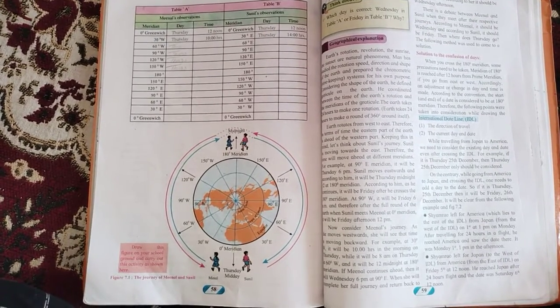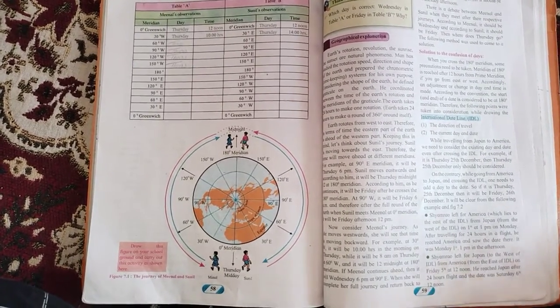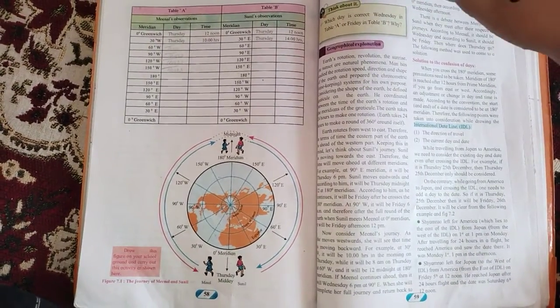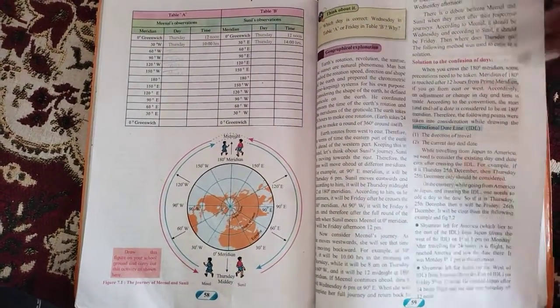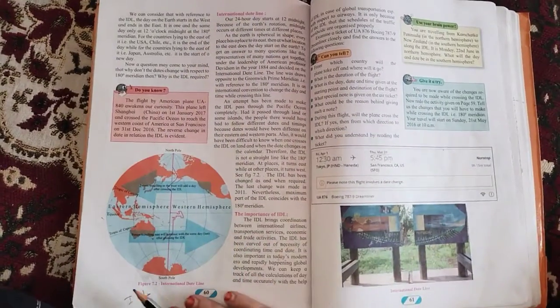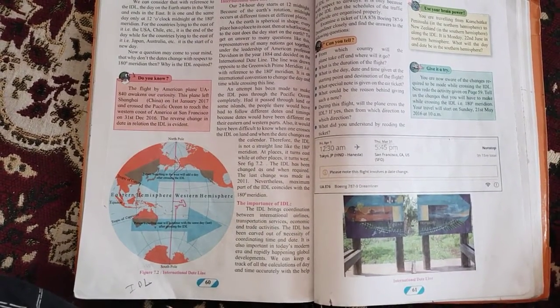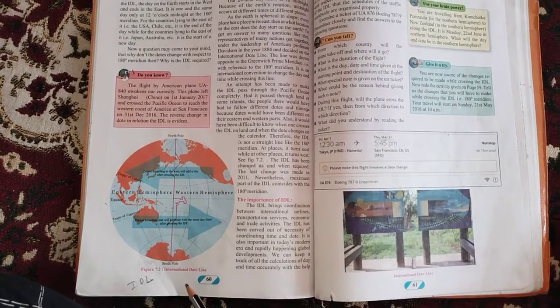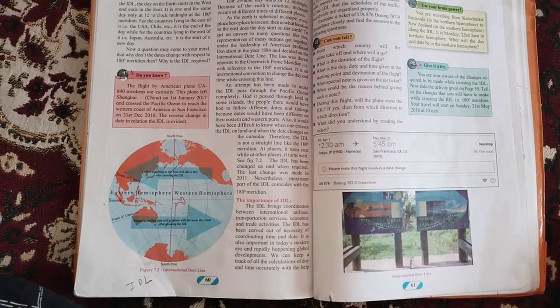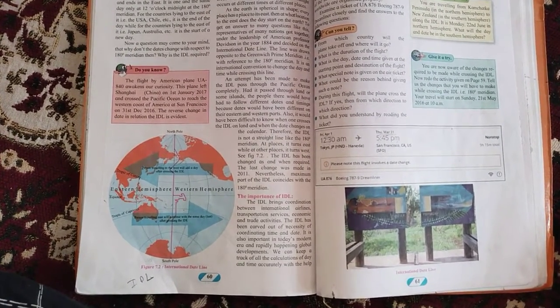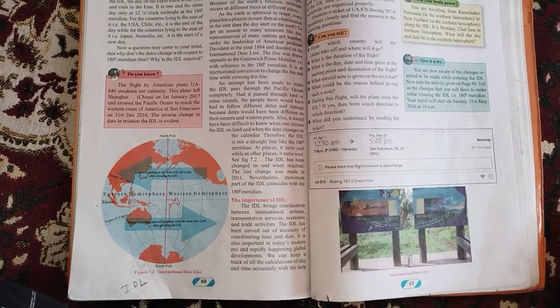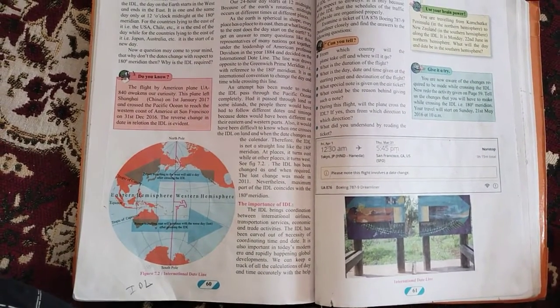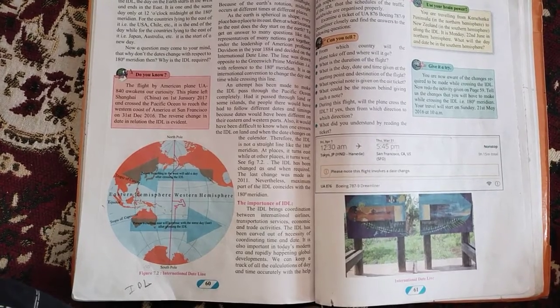The day and date is always ahead by 1 day. IDL is drawn to overcome this problem of 24 hours difference. The day and the date is always ahead by 1 in the west of IDL, then the day and date running to the east of IDL. Hence, when the IDL is crossed while traveling, day and date of the original travel while previous day is considered.